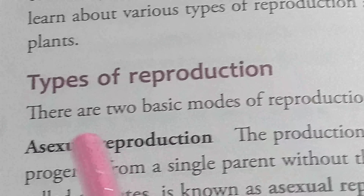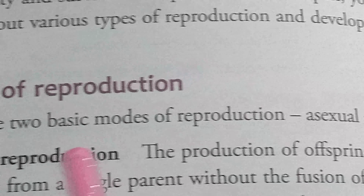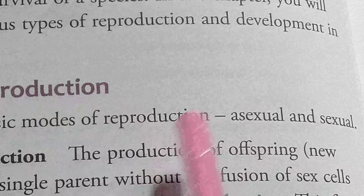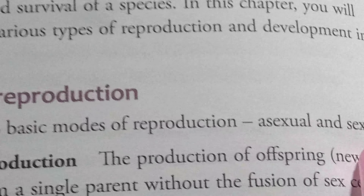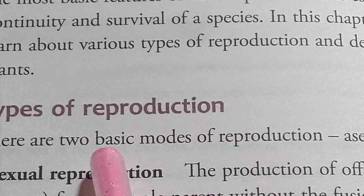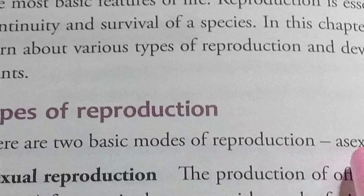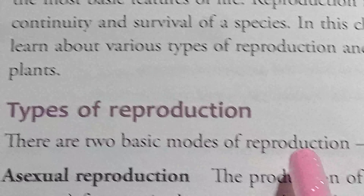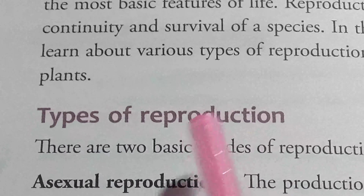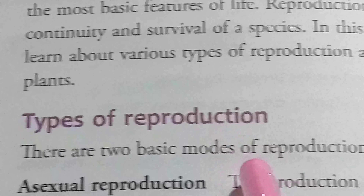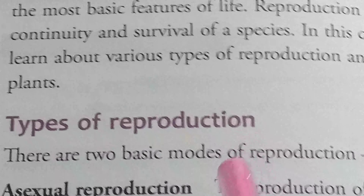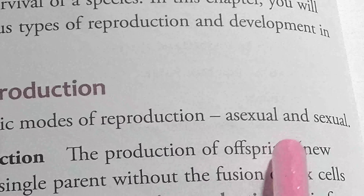Types of reproduction. There are two basic modes of reproduction: asexual and sexual. Reproduction is basically of two types — asexual reproduction and sexual reproduction.